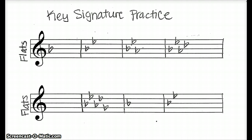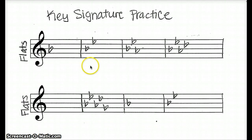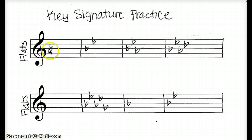So now we're ready to do some practice. We're going to look at our practice sheet, and the first two lines are about flats. Remember the rule for flats: you find the second to last flat, and that's your key. So here we look at our first problem, and we see there's one flat. That's actually rule number 2 — 1 flat equals the key of F. So this is going to be the key of F, and you'd write that right here.